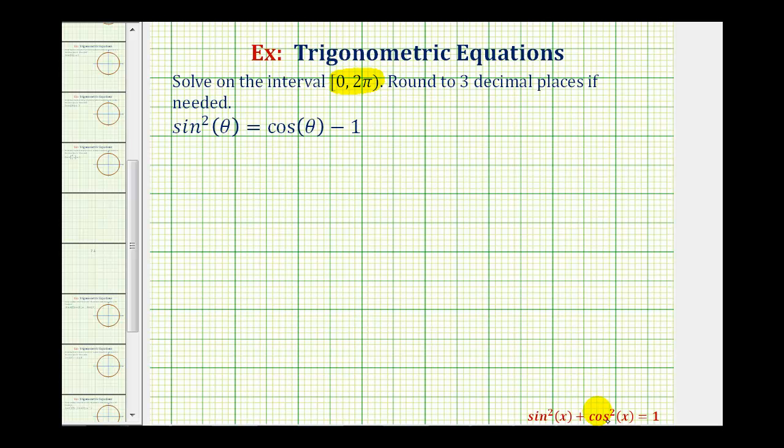We can do this using the Pythagorean identity given here below, sine squared x plus cosine squared x equals one. If we were to solve this equation for sine squared x by subtracting cosine squared x on both sides, we would have sine squared x equals one minus cosine squared x.